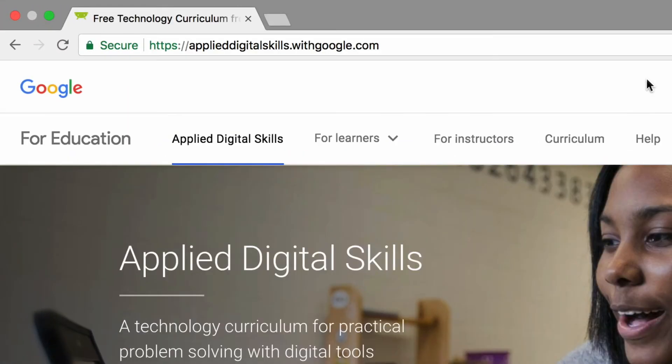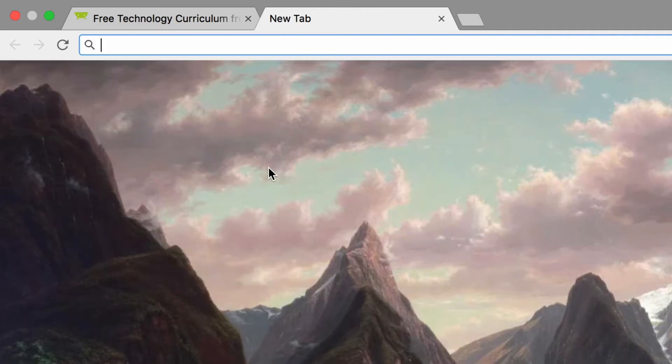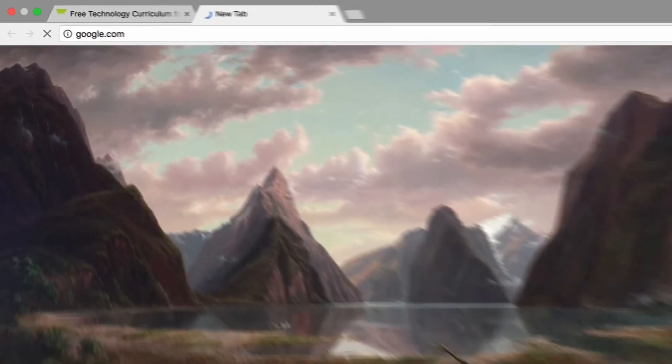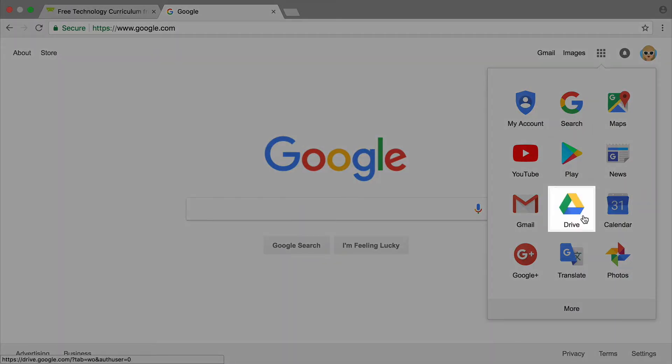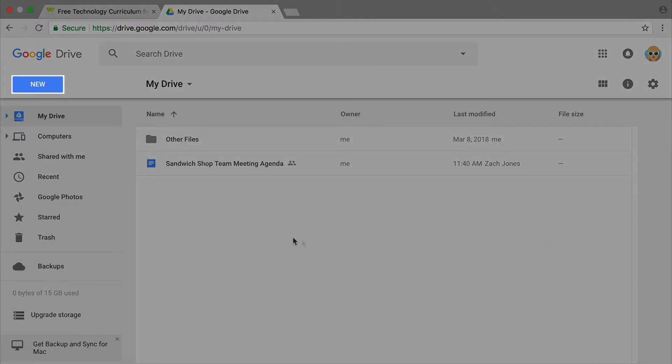To start making your survey, open a new tab in your browser and navigate to the Google Home page, then open Google Drive, and create a blank form.